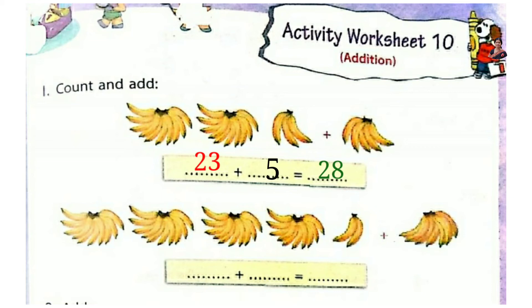Now the next problem: how many bunches? 1, 2, 3, 4 — 4 bunches means 40 bananas. And 40 and 2 is 42. Then 42 plus 1, 2, 3, 4, 5, 6, 7 — that is 42 plus 7. 7 plus 2 is 9, so 42 plus 7 is 40 plus 9 equals 49. So 49 bananas.